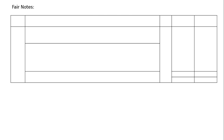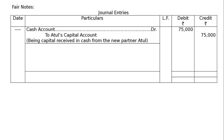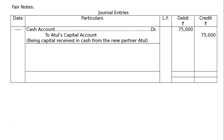Journal entries with proper format — there is no cash received for goodwill. First entry: Cash Account debited to Atul's Capital Account — being capital received in cash from the new partner Atul, that is Rs. 75,000 in the debit and credit columns. Second entry: Atul's Capital Account debited to Bhuvan's Capital Account and to Sivam's Capital Account — being premium money not received from the new partner, transferred to old partners' capital accounts in sacrificing ratio. The premium amount not contributed is debited to the new partner's capital account and credited to old partners' capital accounts in sacrificing ratio.